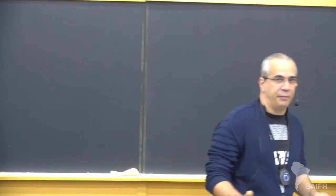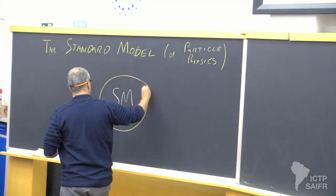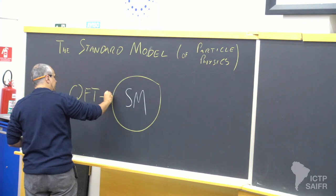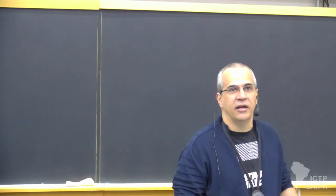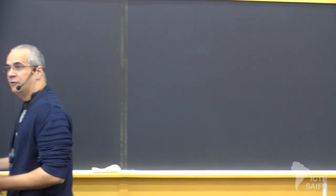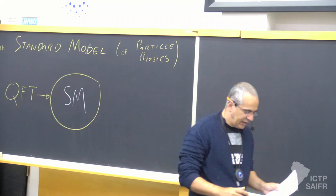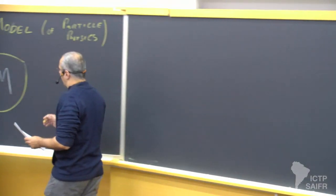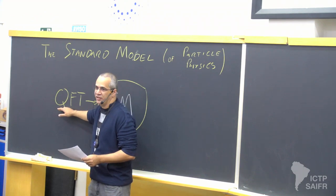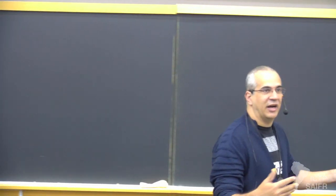The standard model is built on top of a few things — essentially three main ingredients. One of them is quantum field theory, which is this very complicated theory that arises when you try to combine quantum mechanics and special relativity. We cannot cover this fully here in four lectures — quantum field theory is usually a one-year course split into two semesters. You can see my course on quantum field theory on YouTube.